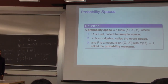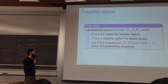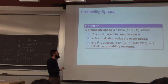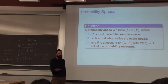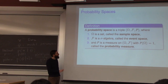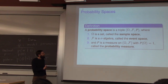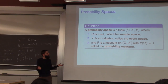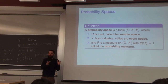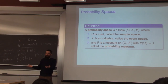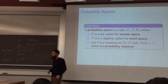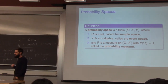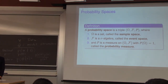To really define probability, you need to define three components: the sample space, the script-F which is the space of all possible events (defining which subsets are valid events), and the probability measure itself. You really have to define this triple of things to define what your probabilities mean.